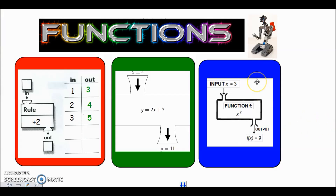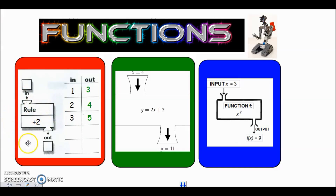When you were in primary school you were using functions and probably didn't even realize it. You may have had something like a function machine — you put numbers into it, there'd be a rule. Our rule here is plus two; that's our function. Something happens in the middle, inputs go in and outputs come out. So you put one in, add two, and the output is three. Put two in, add two, output is four. Three goes through the function and out pops five.